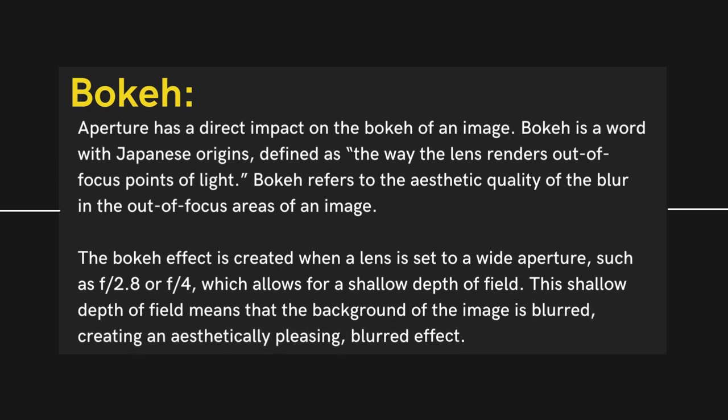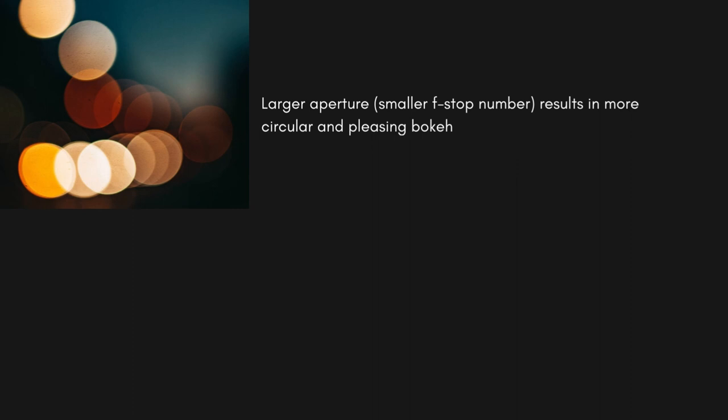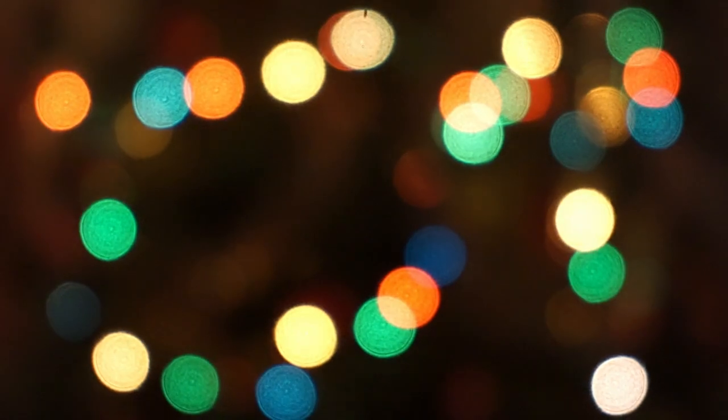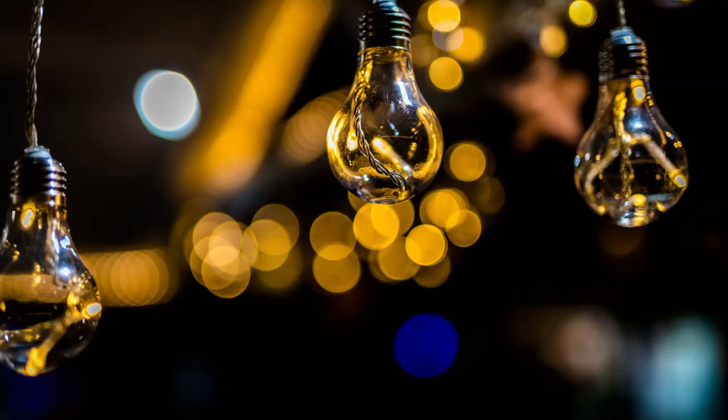Bokeh refers to the aesthetic quality of the blur in the out-of-focus areas of an image. The bokeh effect is created when a lens is set to a wide aperture such as f/2.8 or f/4, which allows for a shallow depth of field, blurring the background in an aesthetically pleasing way. A larger aperture (smaller f-stop number) results in more circular and pleasing bokeh, while a smaller aperture (larger f-stop number) results in more geometric and less pleasing bokeh. This can be used to create a more pleasing or interesting background for your subject. The quality of the bokeh is determined by the number of aperture blades in the lens and the shape of those blades.